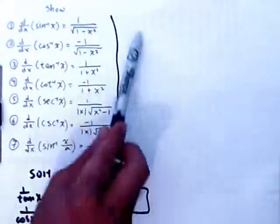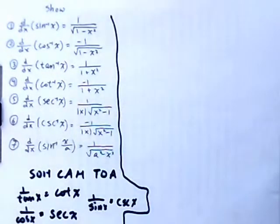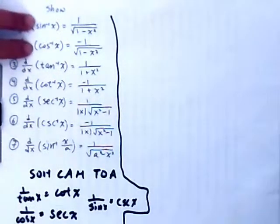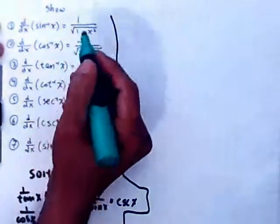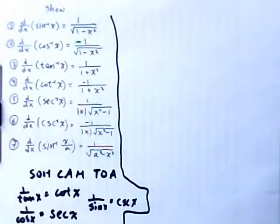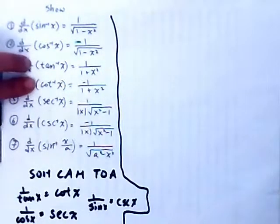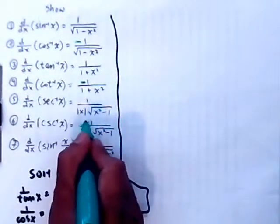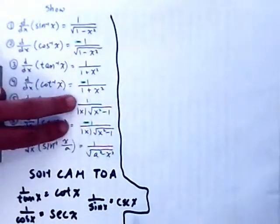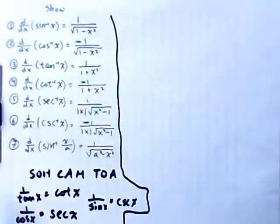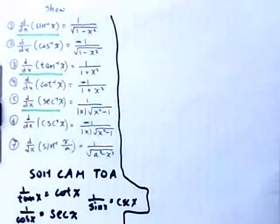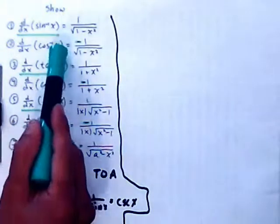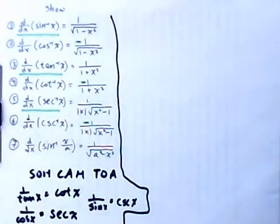This looks like a lot of information, so I'm going to try to break it down for you. There's a pattern to this. The sine and the cosine are cofunctions, and you notice that there's a minus sign. The tangent and the cotangent are cofunctions — one has a plus, one has a minus. The secant and the cosecant are also cofunctions, same thing with a minus or a plus. So all you have to do is remember the tangent inverse and the secant inverse, and you can figure out the cosine inverse, cotangent, and cosecant inverse.